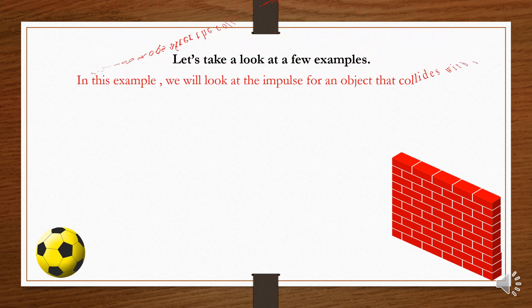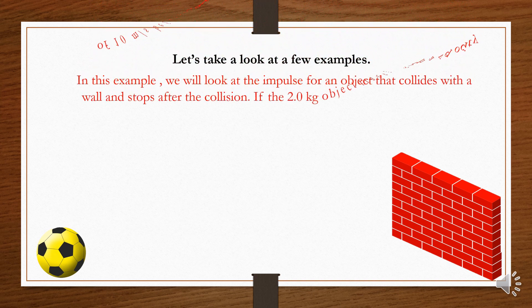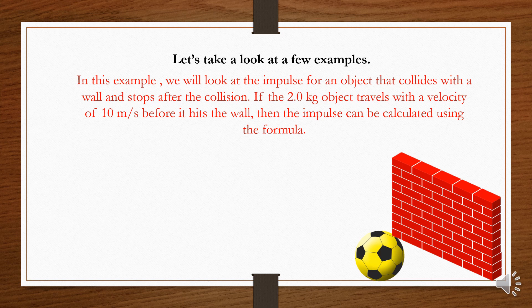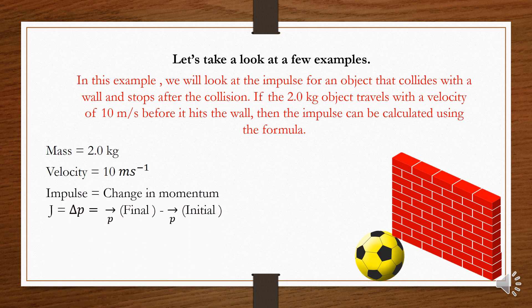In this example, we will look at the impulse for an object that collides with a wall and stops after the collision. If the 2.0 kilogram object travels with a velocity of 10 meters per second before it hits the wall, then the impulse can be calculated using the formula: Impulse is equal to change in momentum.